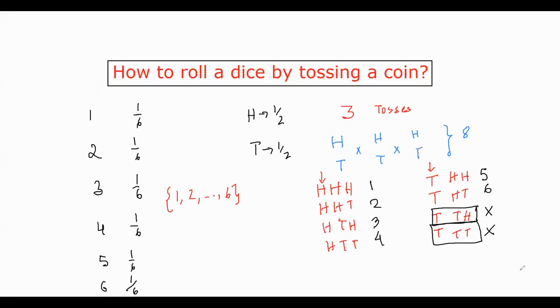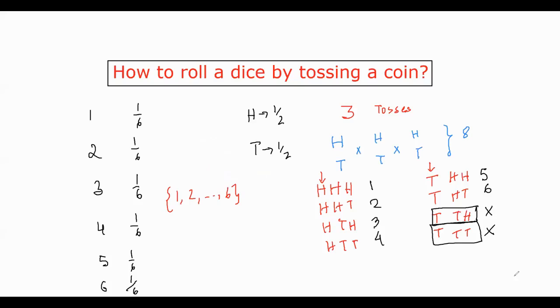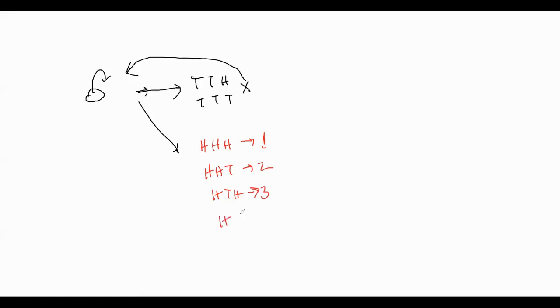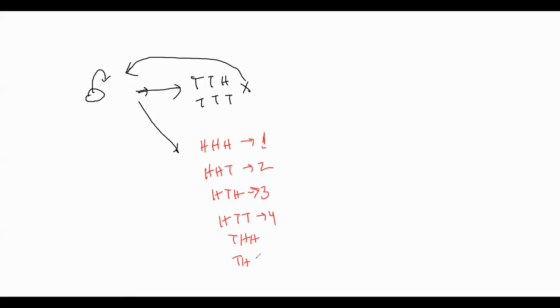If it's HHT, it's 2. And if you get HTH, 3. If you get HTT, you get 4. And the rest of the two paths, THH and THT. For this, you get 5 and 6 respectively. So this is the coin tossing experiment.